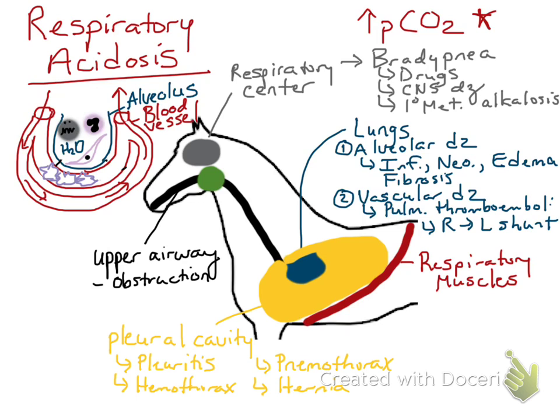Finally, respiratory muscles: you can get a respiratory acidosis if there's paralysis of those muscles — paralysis of the diaphragm or paralysis of the intercostal muscles. However, this is something we don't really diagnose with ClinPath data. You really need physical exam findings and history to identify this, so respiratory muscle paralysis won't be emphasized in this class.